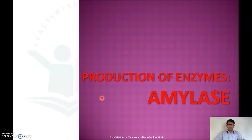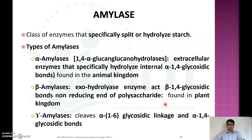In this video we will discuss the production of enzyme amylase. Let's start with an introduction to amylase. These are a class of enzymes that specifically split or hydrolyze starch, and there are different types of amylase: alpha, beta, and gamma.